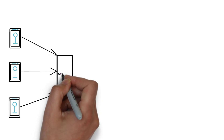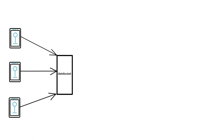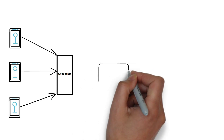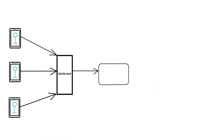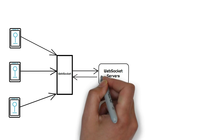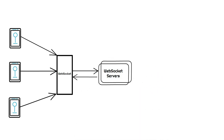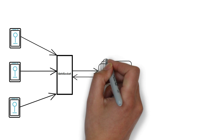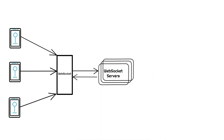Different clients will initiate different WebSocket connections with the server. With increasing load every day, our servers should be horizontally scalable — we should be able to add more servers. Here comes a problem: if there is an open connection of User 1 with Server N, and a message comes for User 1 which is received by Server N+1, how do we handle that?